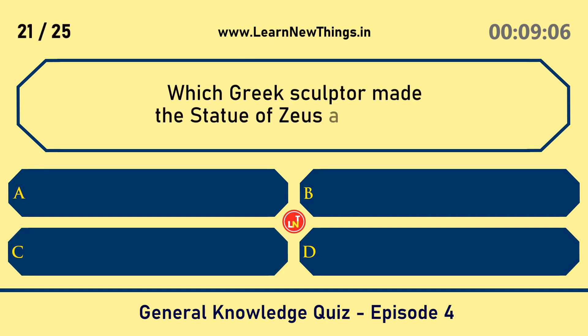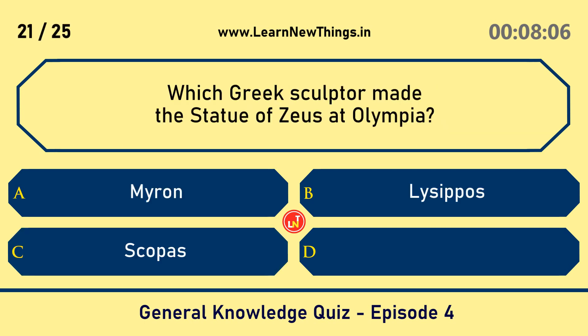Which Greek sculptor made the statue of Zeus at Olympia? Phidias.